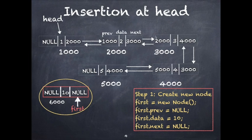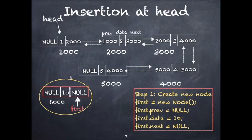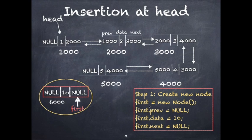Now we will concentrate on the operations you can do on a doubly linked list — same as singly linked list: insertion at head, insertion at any random position, and insertion at the tail. For insertion at head, first you have to create a new node. I have named this new node 'first'. The address of this node is 6000, it contains data value 10, and the previous and next parts are pointing to null.